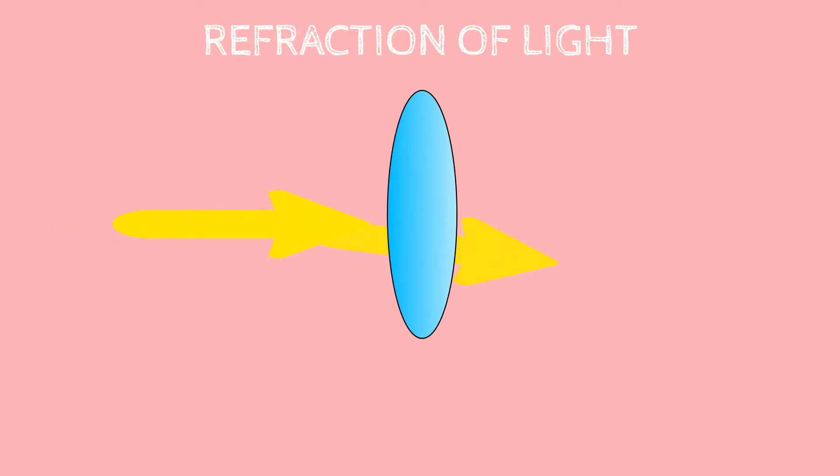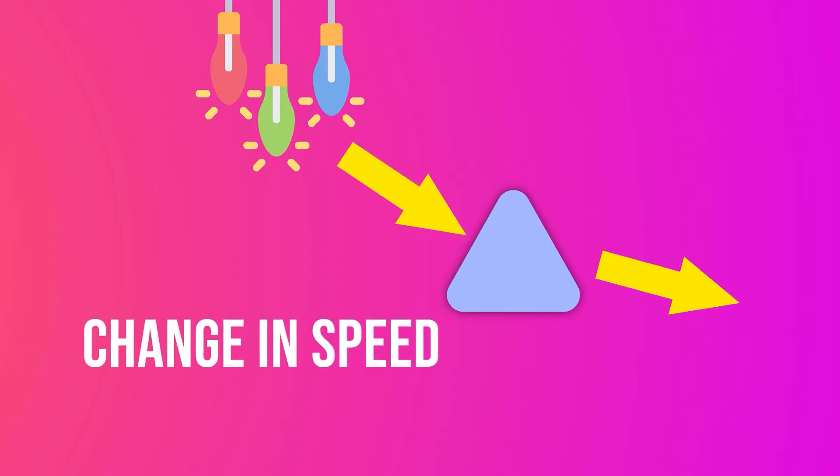Light energy that passes through a lens or water is refracted because the speed of light slightly changes. When light rays are transmitted from one medium to another or from air to water, the speed of light slows down.